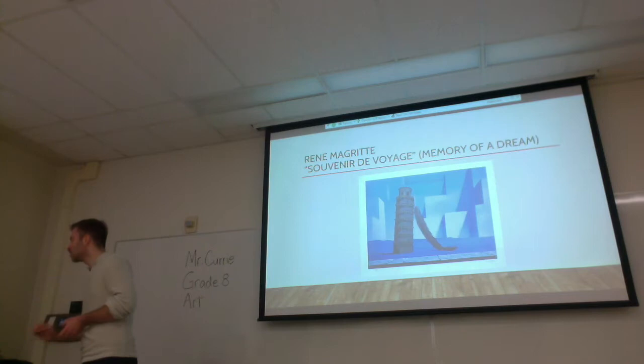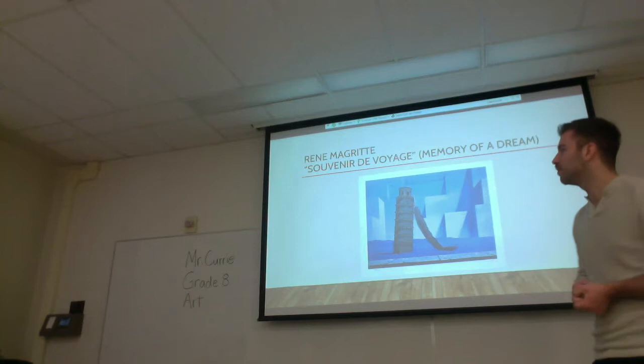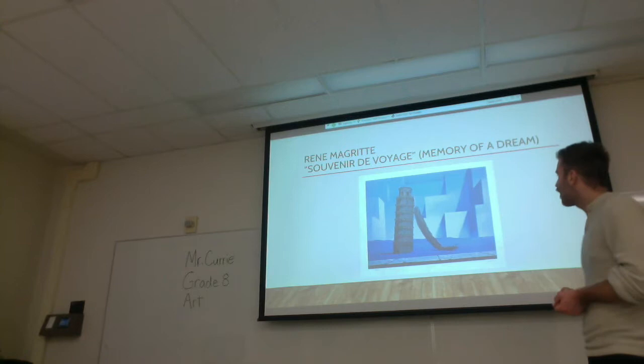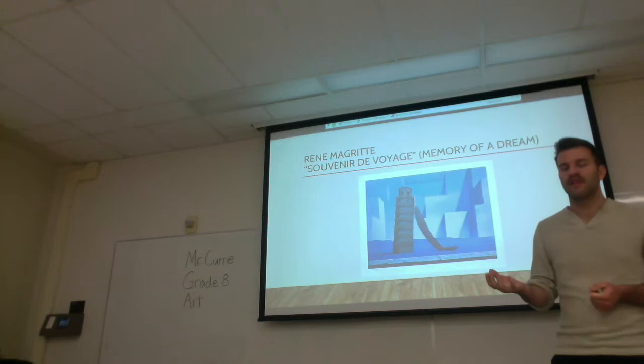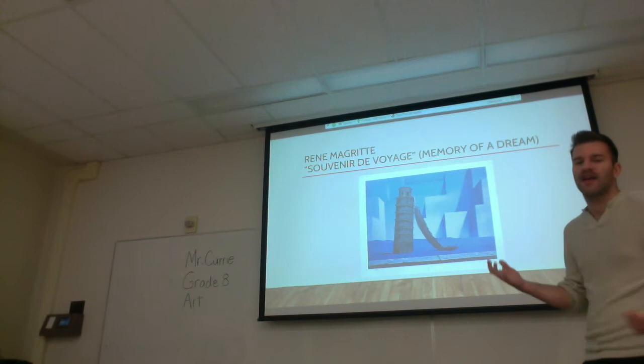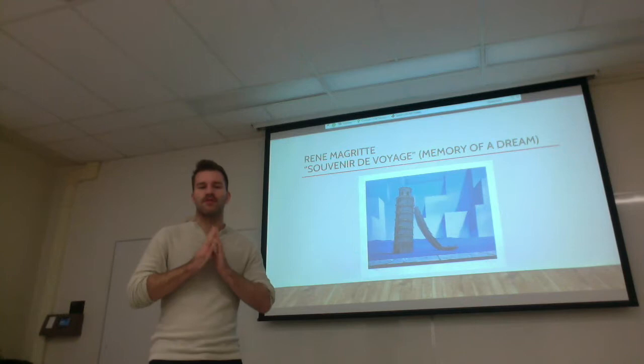Two artists use a lot of juxtaposition within their work. The first is René Magritte, and this is called Souvenir de Voyage, or Memory of a Dream in English. This painting is very surreal — it has the Leaning Tower of Pisa leaning against a giant feather. The Leaning Tower of Pisa is a man-made structure and it's very heavy, whereas the feather is light and natural. But the similarity is that they both have a sense of fragility, as if they're holding each other up and are almost about to topple over.